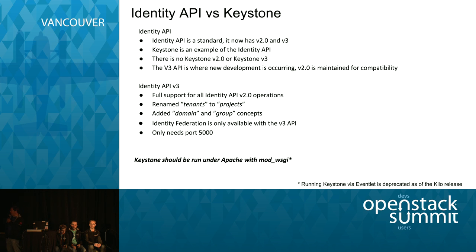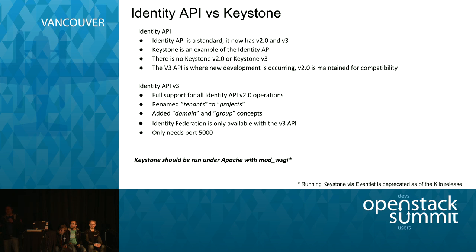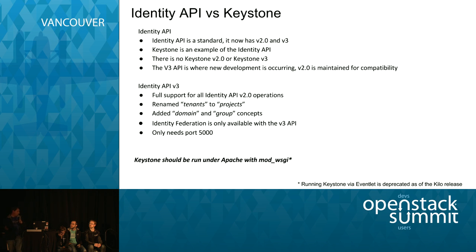Another key change worth pointing out is how you deploy Keystone. Originally you'd run in standalone mode using a Ventlet — nice, lightweight, easy to go. But when you need more security and start using Federation-based protocols like Shibboleth, the proper way to run it is as part of Apache using mod_wsgi. That is now the official supported way to run it. It's been added to DevStack, and you'll be a lot happier running it in that deployment.